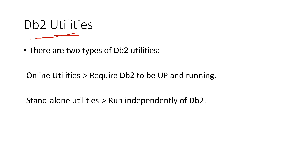Generally we have two types of utility: one is the online utility and the second one is the standalone utility. Online utilities run as a standard batch job or stored procedure. Online utilities require DB2 to be up and running in an active state, and they do not run under the control of the Terminal Monitor Program, that is TMP. Online utilities have their own attachment mechanism and they invoke the DB2 control facility service directly.